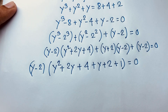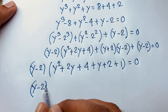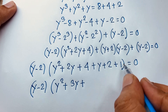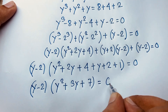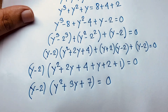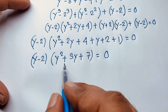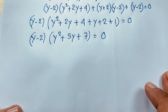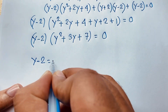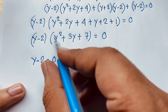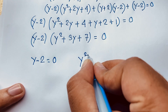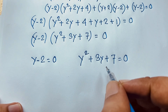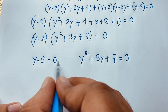This simplifies to (y minus 2)(y² plus 3y plus 7) equals 0. This gives two cases. First case: y minus 2 equals 0. Second case: y squared plus 3y plus 7 equals 0. From the first case, y equals 2.